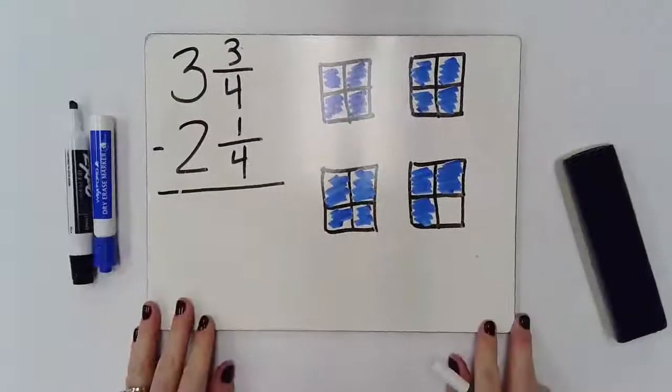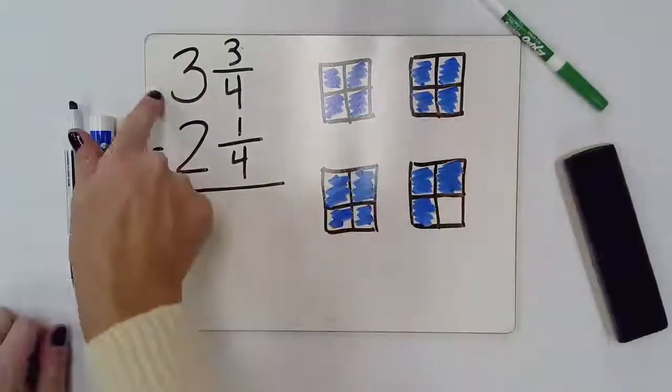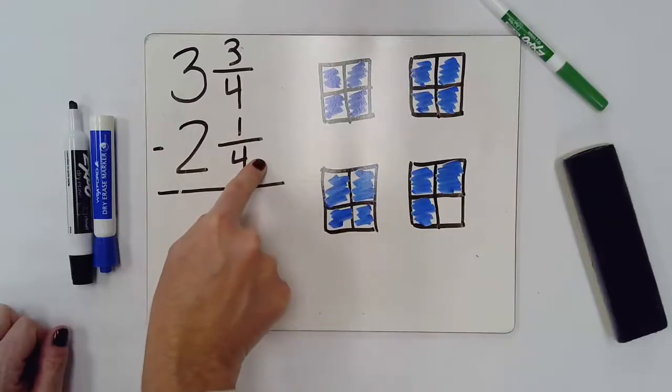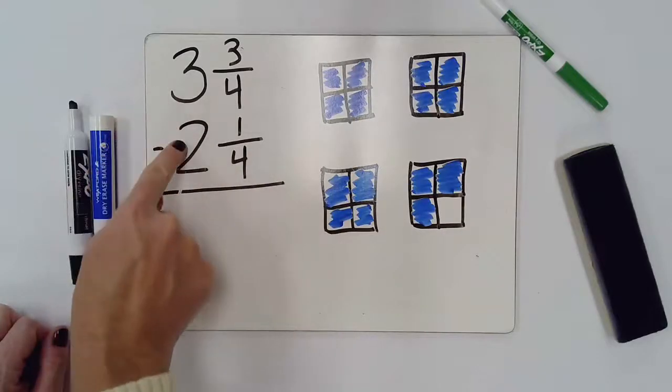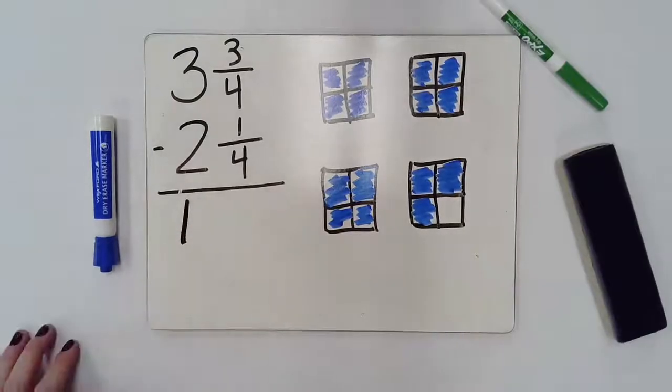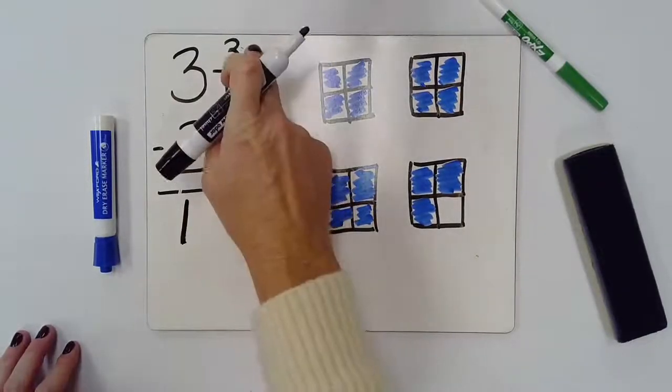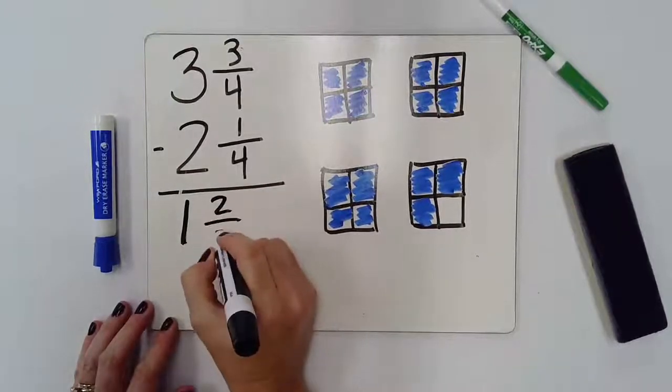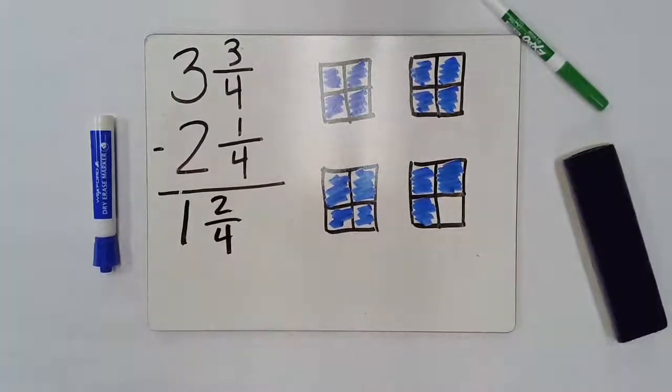All right. So, let's go ahead and look at another problem. This time, we're going to be focused on subtraction. So, we have 3 and 3 fourths minus 2 and 1 fourth. We know that 3 minus 2 is going to give us 1. So, I have that 1 hole. And then I know if I have 3 fourths and I take away 1 fourth, I'm going to have 2 fourths or 1 half.